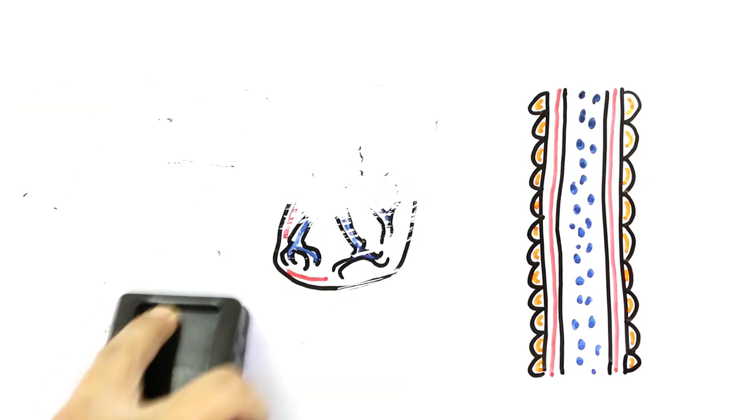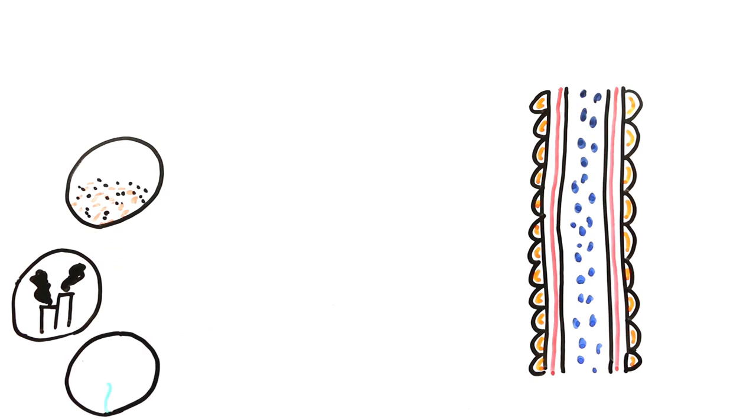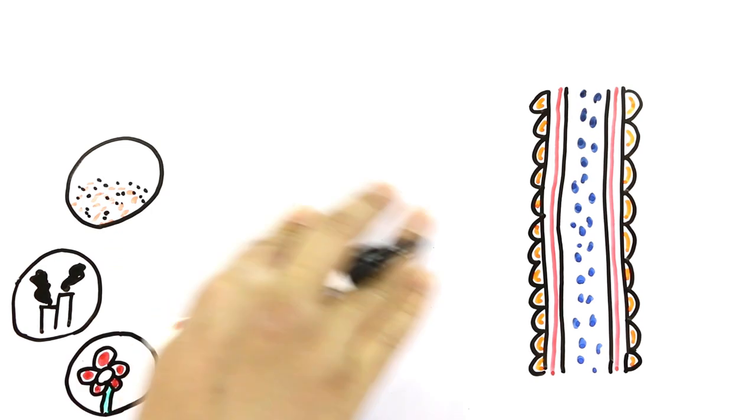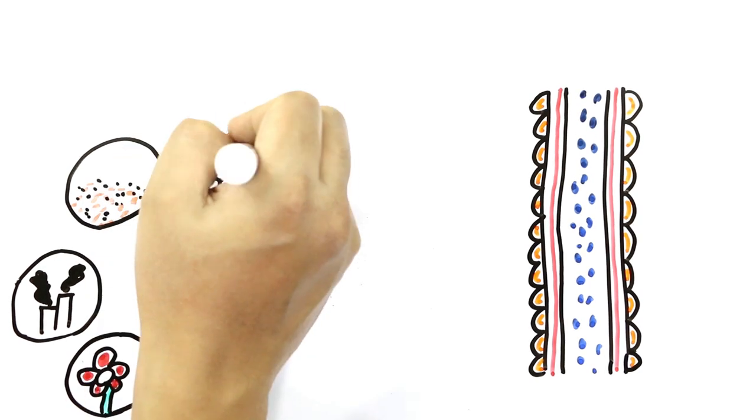Asthma attacks occur due to different triggers in different people. These could be smoke, dust, fragrance, exercise, stress, increased humidity, and even cold weather.